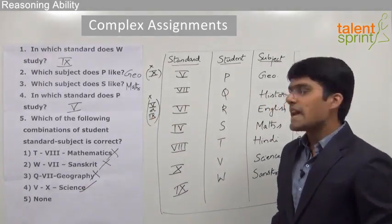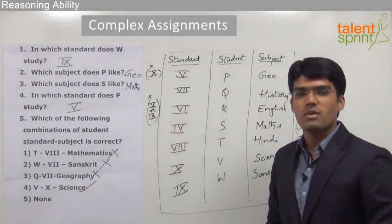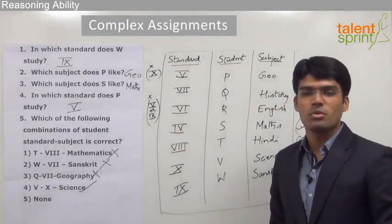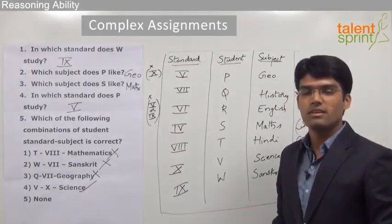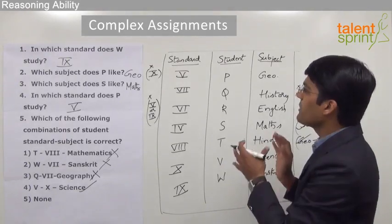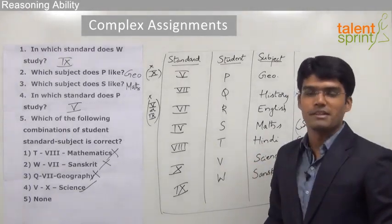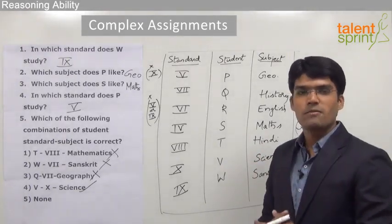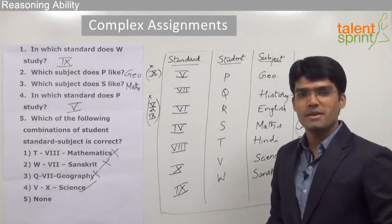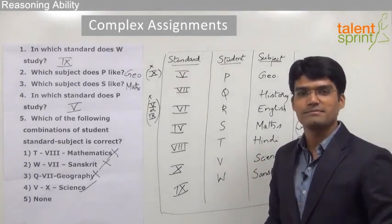So friends, as you have seen here, answering these 5 questions will not take more than 10 seconds. The only thing we need to do properly is the allotment of the variables in the correct order. That's all from complex arrangements. See you in the next session. Thank you.